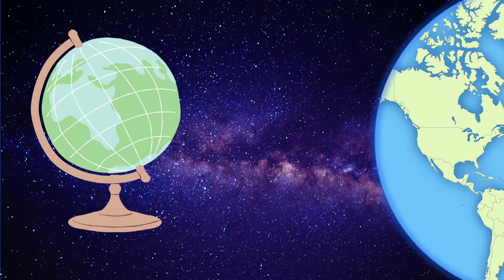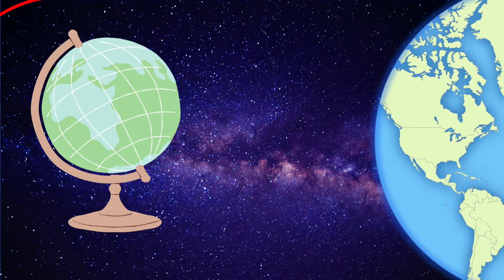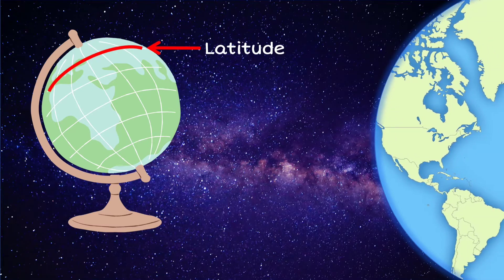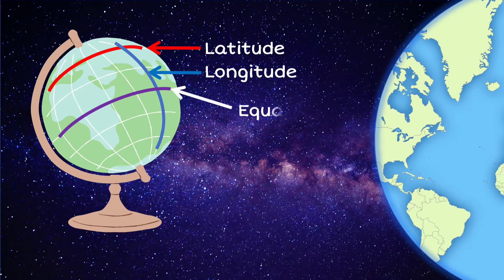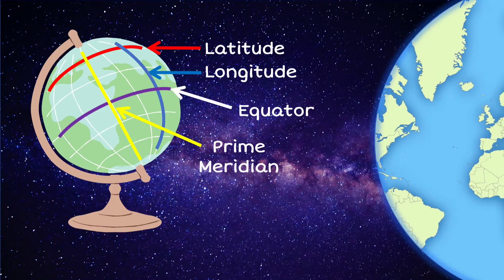There are imaginary lines on the globe. These are the latitude, longitude, equator, and prime meridian.